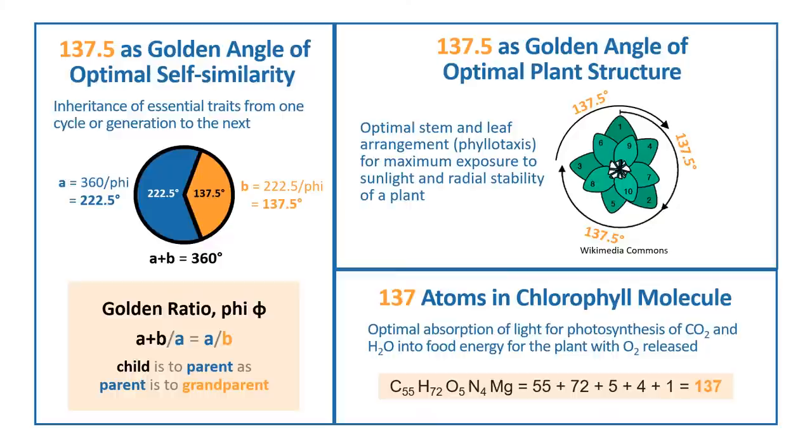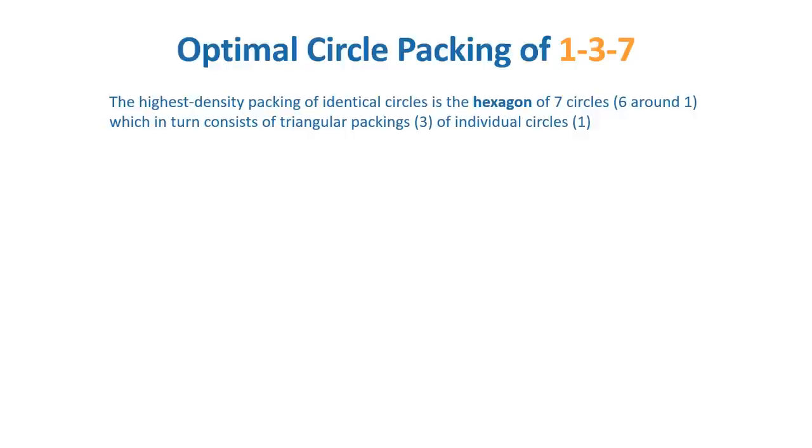So, just as 137 optimizes plant structure for exposing chlorophyll to light, 137 also optimizes the molecular structure of chlorophyll itself for utilizing that light.